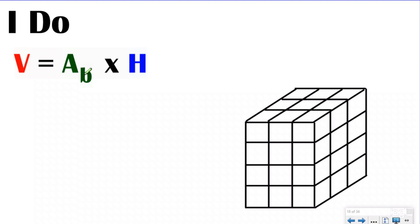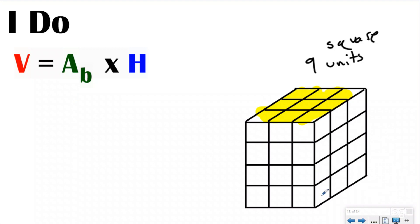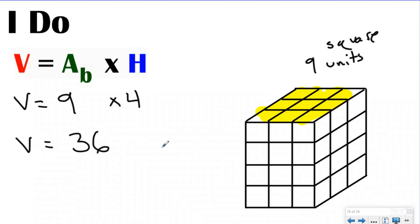Here we have the formula volume equals area of the base times the height, and I have a rectangular prism. I can't see the area of the base, so I'll look at the area of the top: 3, 6, 9 — nine square units. Since the area of the base is nine square units, there are nine cubes in each layer. The height is 1, 2, 3, 4 — four layers. So the area of the base is 9 and the height is 4: 9 times 4 gives a volume of 36 cubic units. We use cubic units because we're counting how many cubes make up the shape.